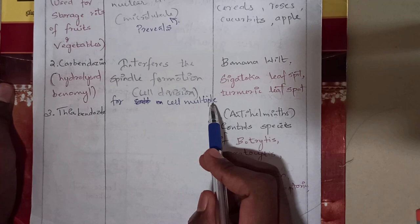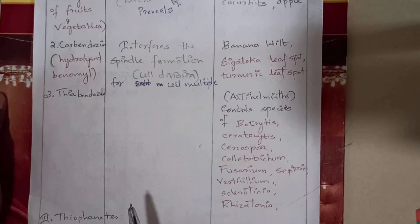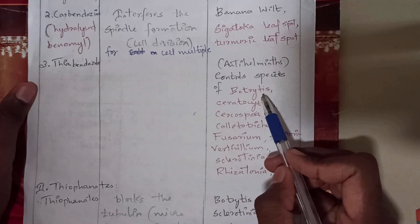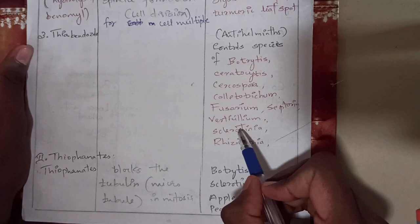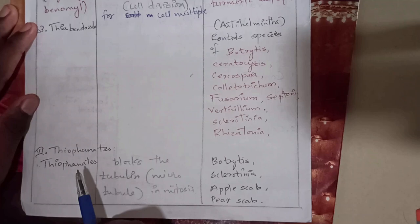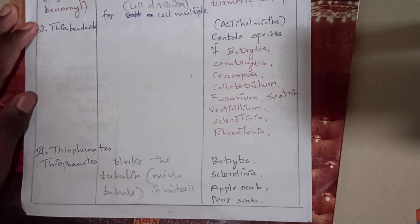Spindle fibers are formed for cell multiplication, so carbendazim prevents cell division of the fungus. The third compound is thiabendazole, an anthelmintic which controls species of Botrytis, Ceratocystis, Cercospora, Colletotrichum, Fusarium, Septoria, Verticillium, and Sclerotinia. The third group in benzimidazole is thiophanates, which prevent diseases caused by Botrytis, Sclerotinia, apple scab, and beard scab.